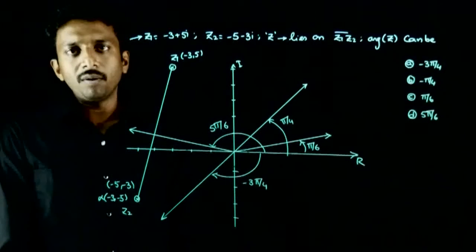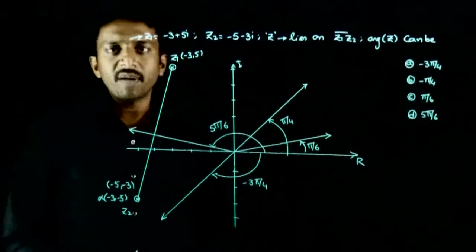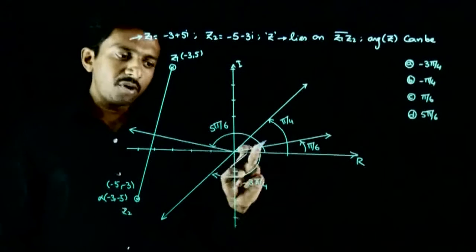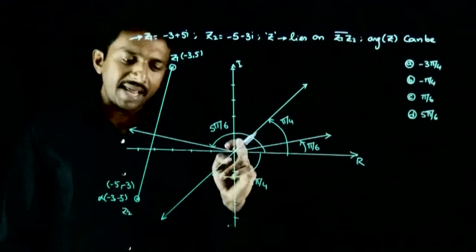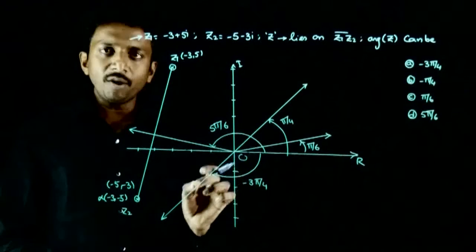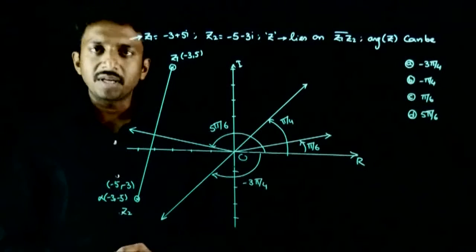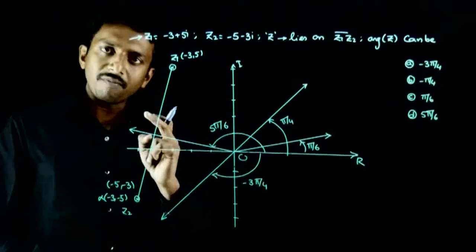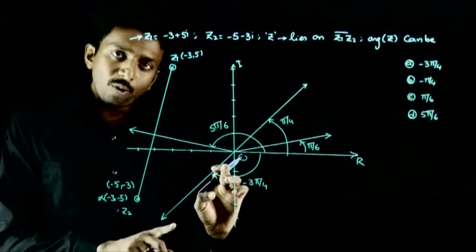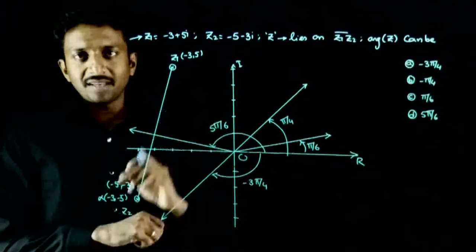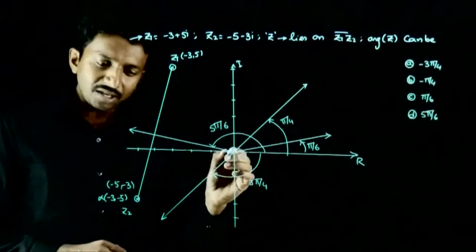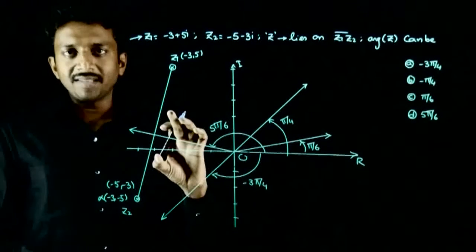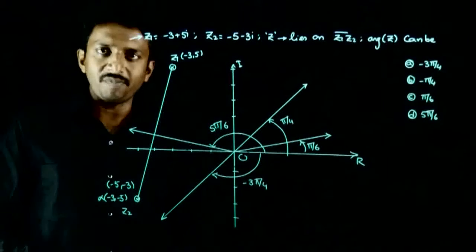Can the argument be -3π/4? If you draw a ray from the origin at an angle of -3π/4, any point on this ray will have argument -3π/4. You can see from this diagram that no point on this ray lies on this line segment. There is no point on this line segment whose argument is -3π/4.